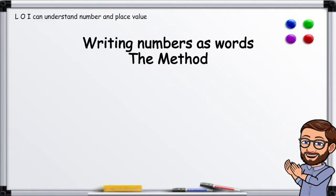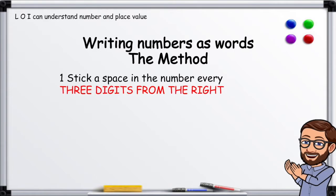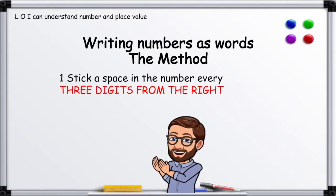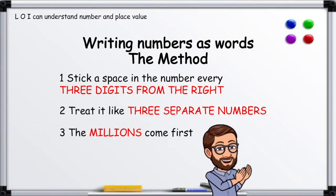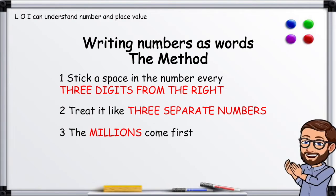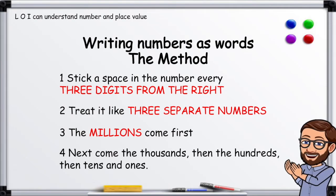Writing numbers as words: the method. Stick a space in the number every three digits from the right. Treat it like three separate numbers. The millions come first, next come the thousands, then the hundreds, then the tens, and ones.